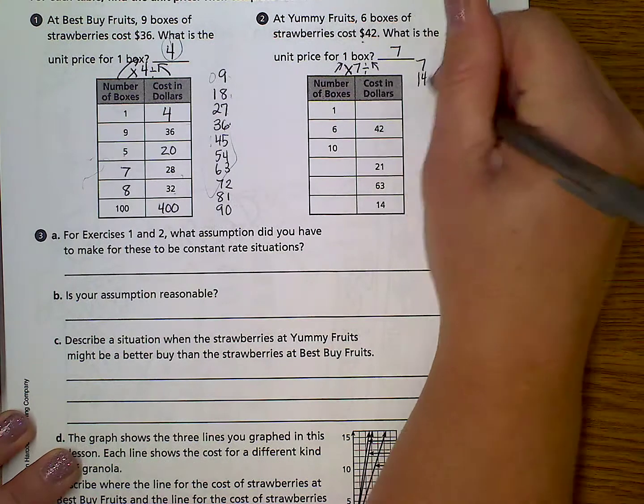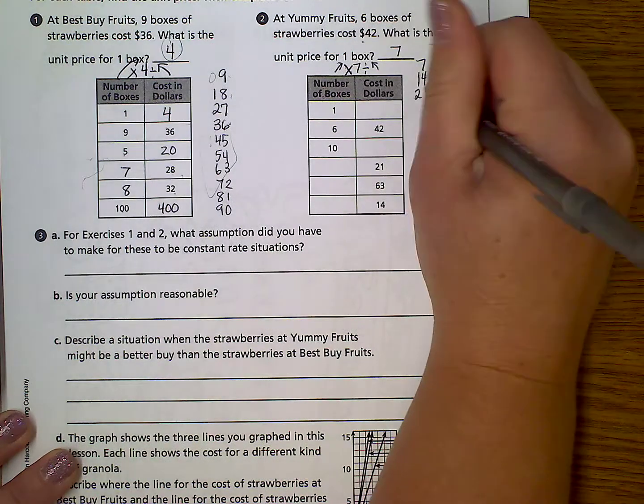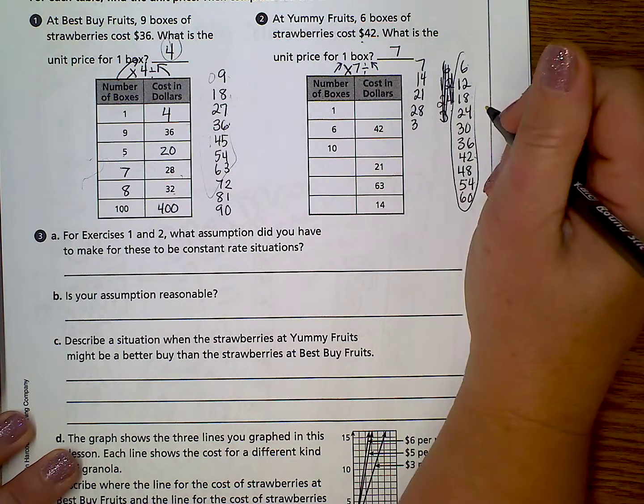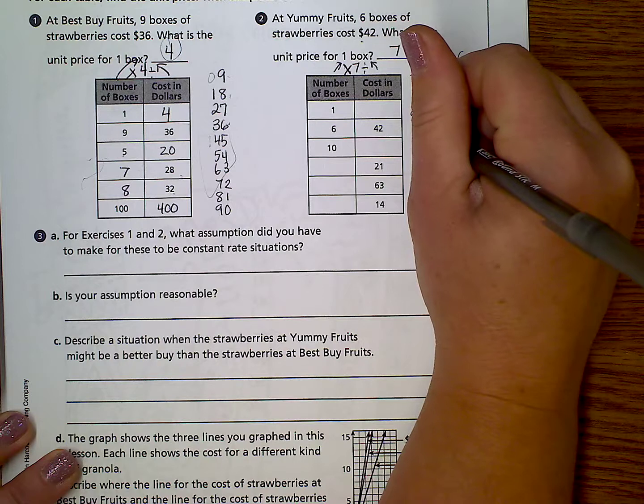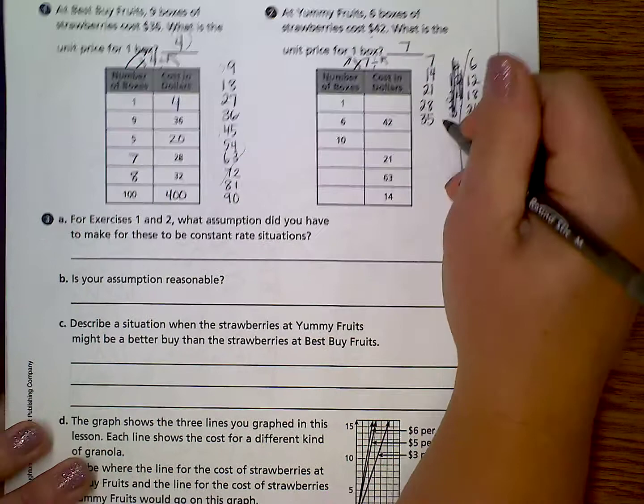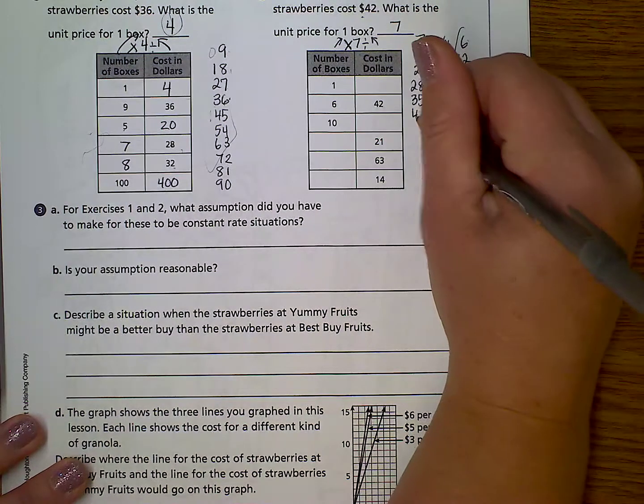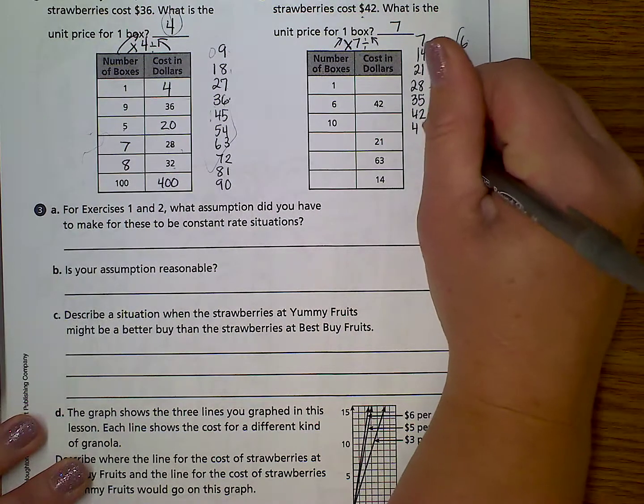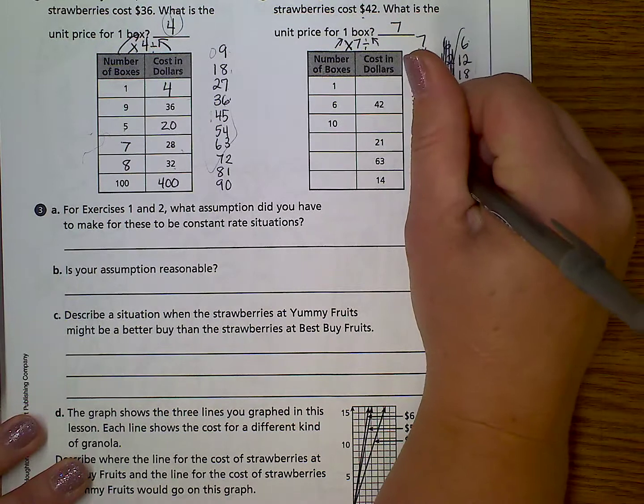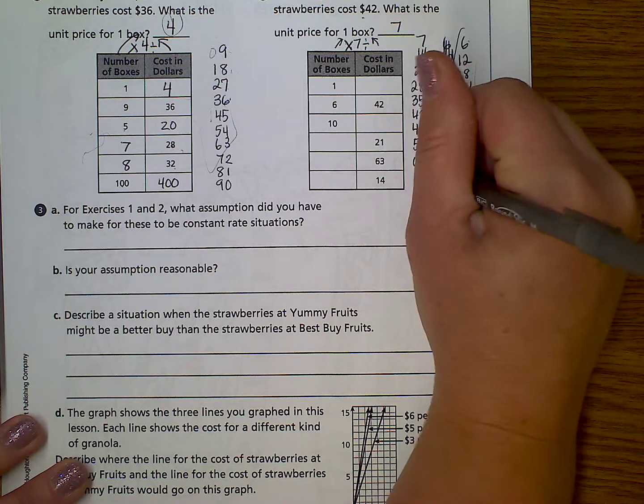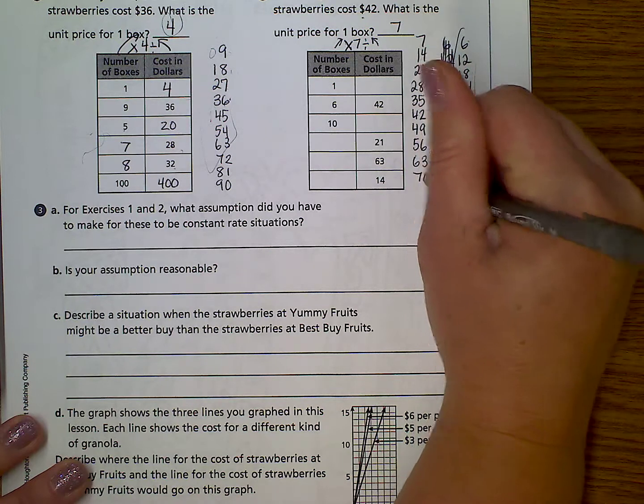7, 14, 21, 28, 30, 20. Boy, it's crazy, thinking about how your brain works sometimes. 42, 49, 56, and 63, 70.